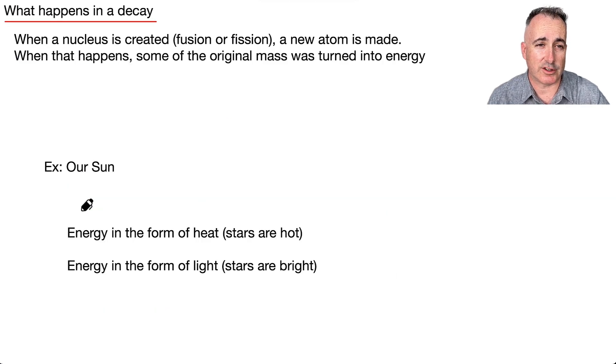So what actually happens in a decay, just to reiterate, when a nucleus is created, and this could be either through fusion, which is when you go from lighter elements to heavier elements, or fission, where you go from heavier elements to lighter elements. But whenever you make a new atom, then some of that mass was turned to energy. In other words, we have this equation, E equals mc squared, that's going to drive this.